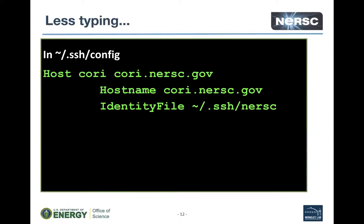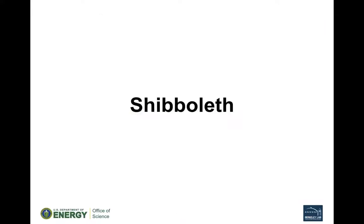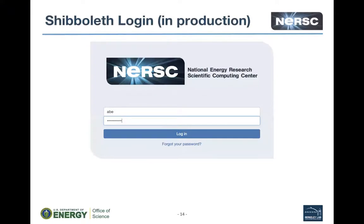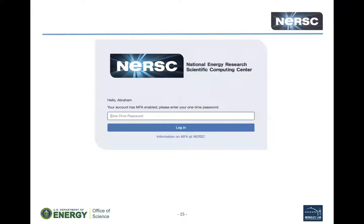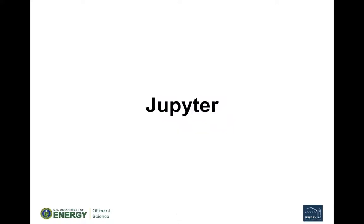Another thing you can do is add this into your SSH configs so you don't have to bother typing out the dash-i options. For Shibboleth, if anybody has MFA enabled and they've logged in, this is what you'll see: the normal username/password screen, and then if you have MFA enabled it'll prompt you for your MFA password. You enter it, and that should last for 24 hours. It should work across other Shibboleth-enabled resources at NERSC. For most people interacting with help, it prompts you once and then you don't see it again for a day.